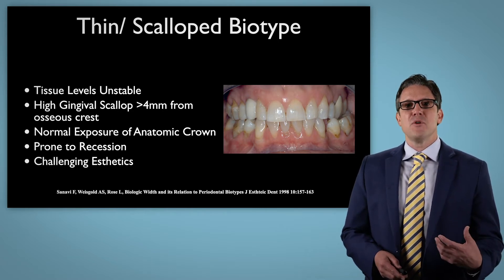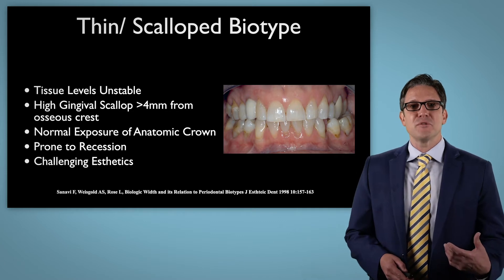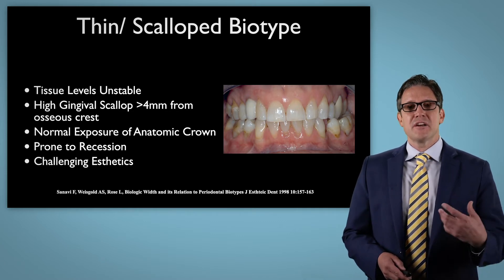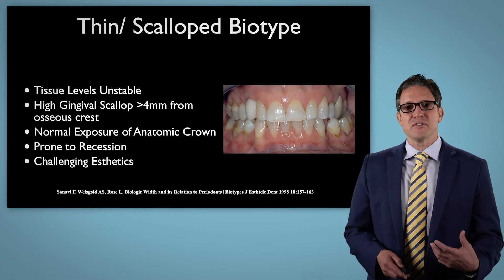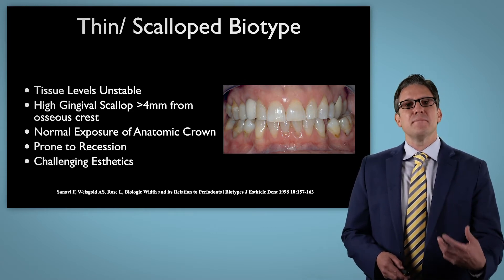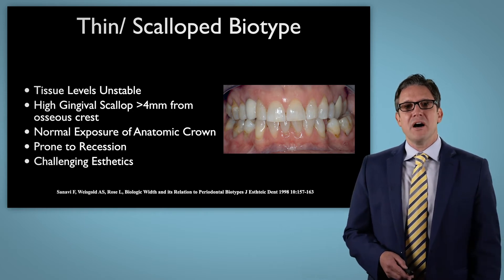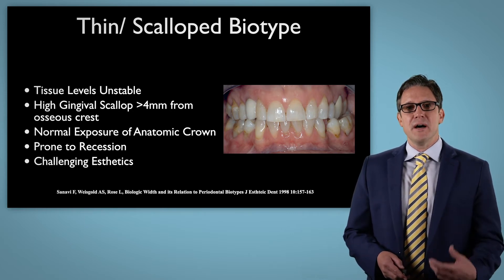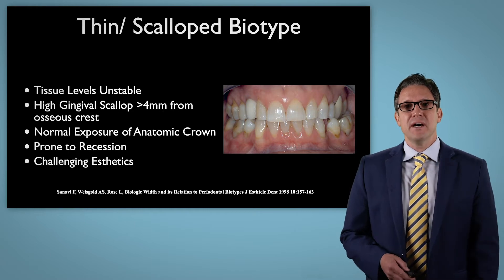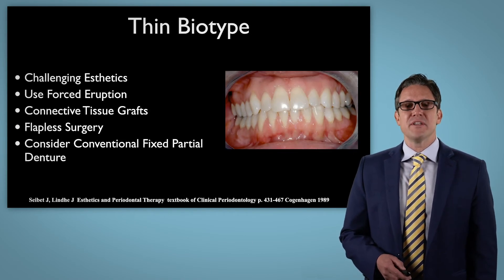Next we have the thin scalloped tissue biotype. These tissues are unstable — we have high gingival scallops from the osseous crest and normal exposure of the anatomic crown, but patients are prone to recession. These are very challenging aesthetic cases, and not recommended for beginners or even moderately experienced implant dentists.